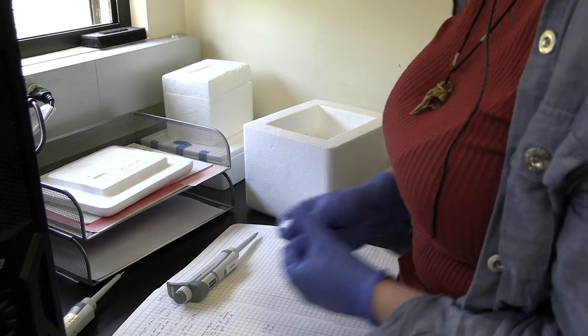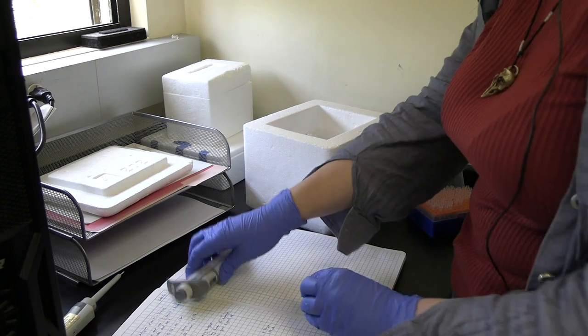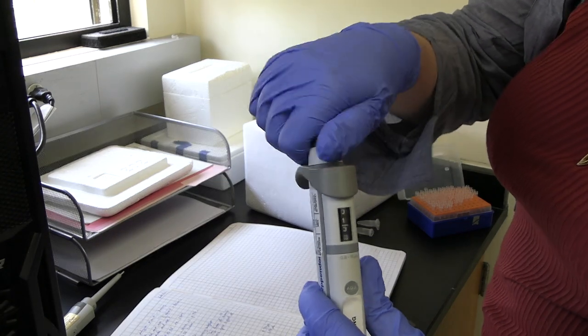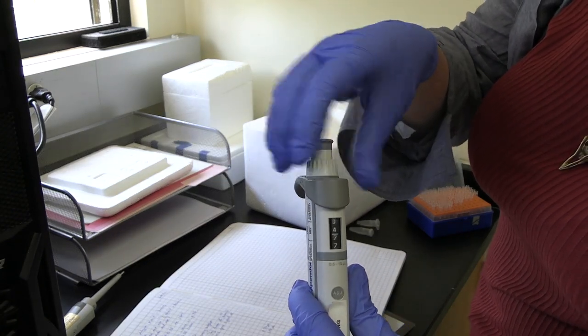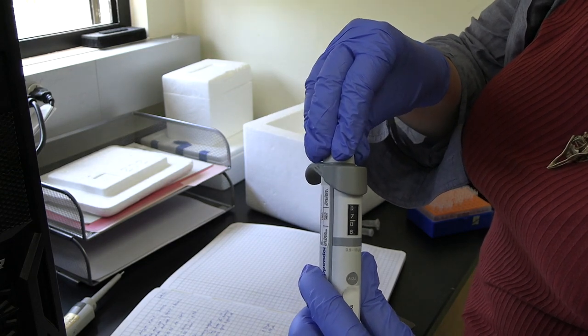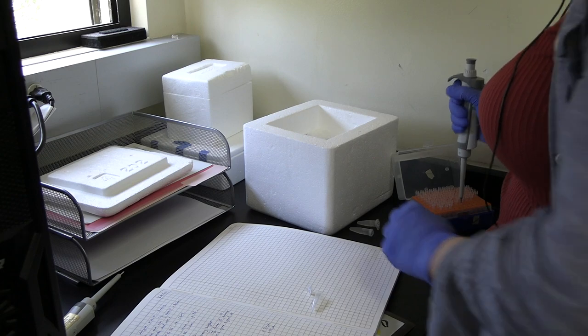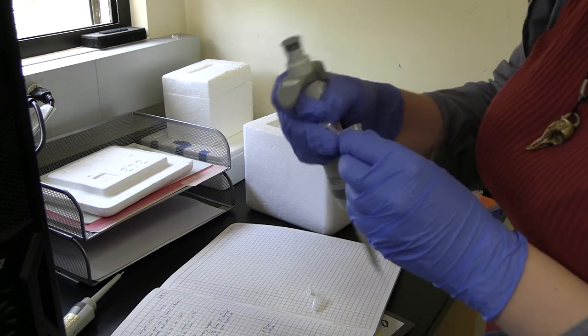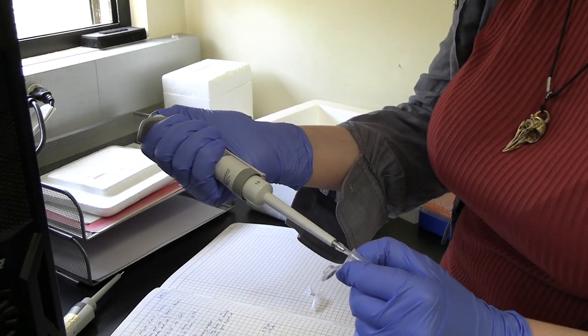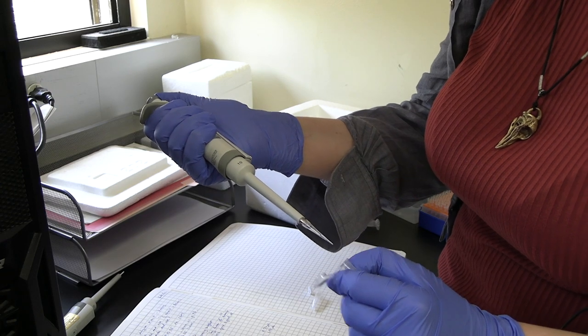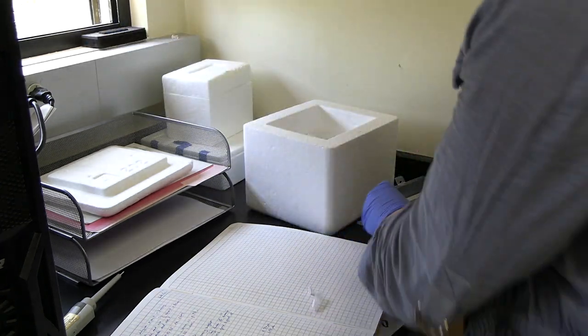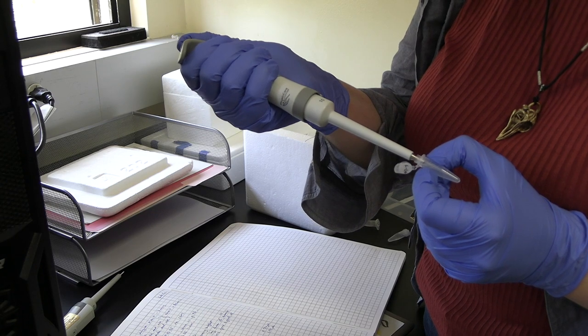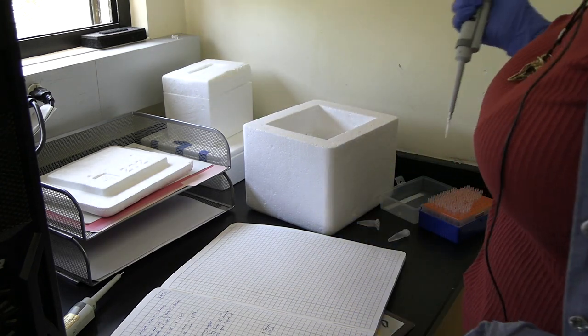I've labeled a tube here, K-clusters for kinesin clusters. First thing I'm going to put down is our PEM buffer, 7.07 microliters. Depress my pipette, draw, take it out. Looks like about 7, that's good. Carefully add, then dispose of my pipette tip.